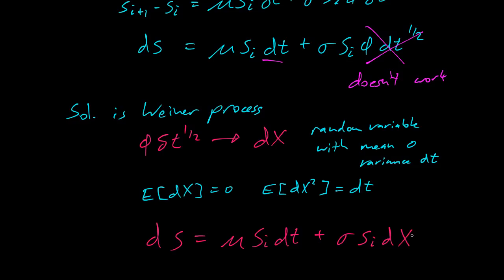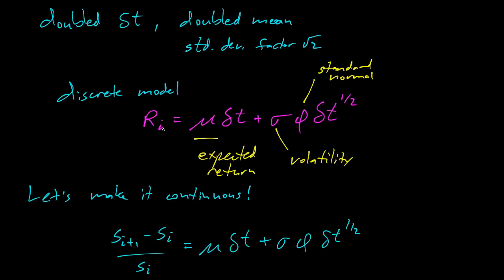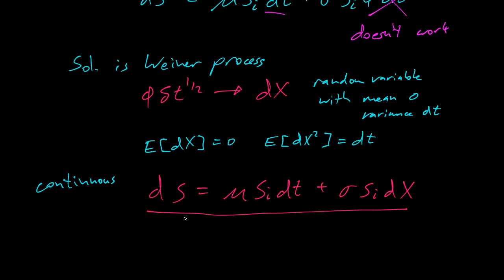And so there we have it, our first stochastic differential equation. And this is the continuous version of our model up above. So up above, the discrete one was here, with the expected return, volatility, and the standard deviation, or standard normal random variable. And here we have our continuous version. Pretty neat.